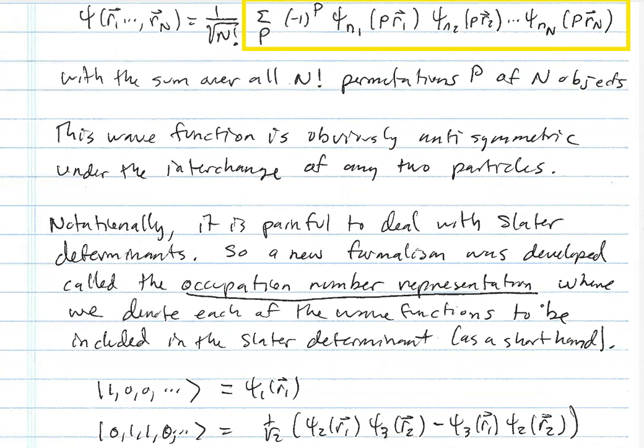Those of you that know linear algebra might recognize that sum is actually the determinant of a matrix formed by making columns indexed by the different arguments. So we'd have psi_1 of R1, psi_1 of R2, psi_1 of R3, all the way down to psi_1 of RN forming one column, then psi_2 of R1, psi_2 of R2, psi_2 of R3, and so on. If I take the determinant of that matrix, that's exactly what this many-body wave function would be.